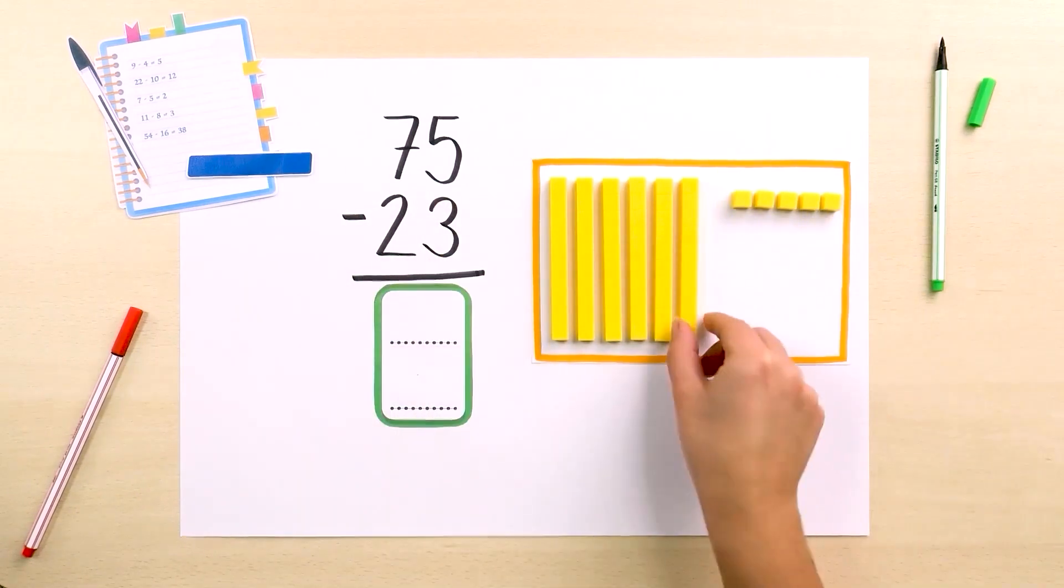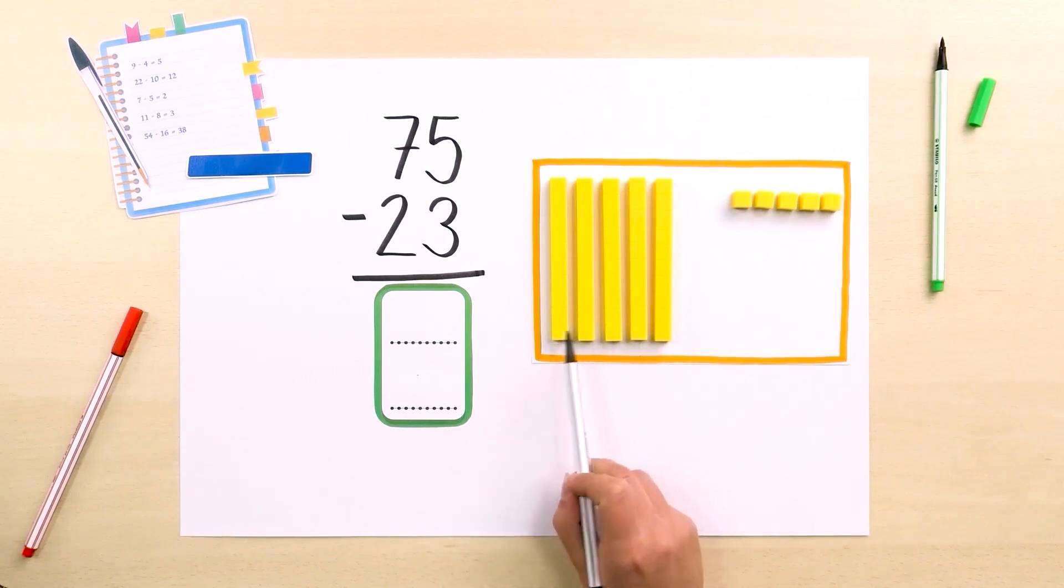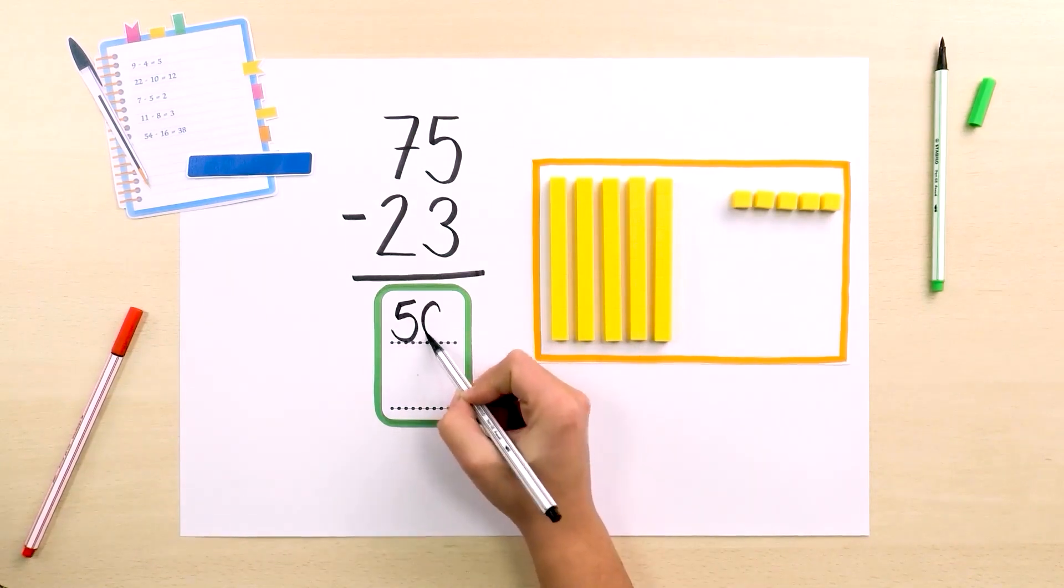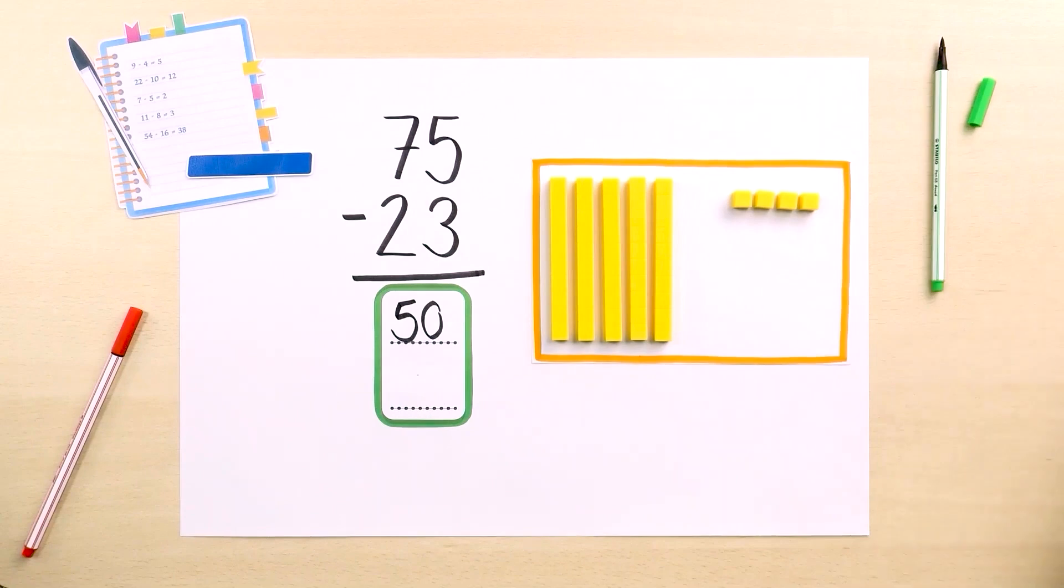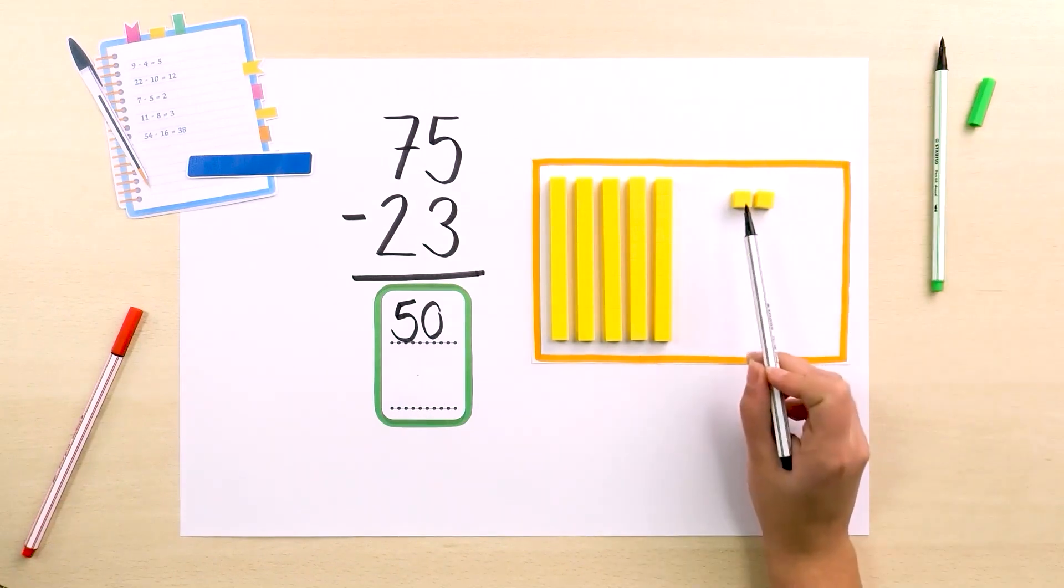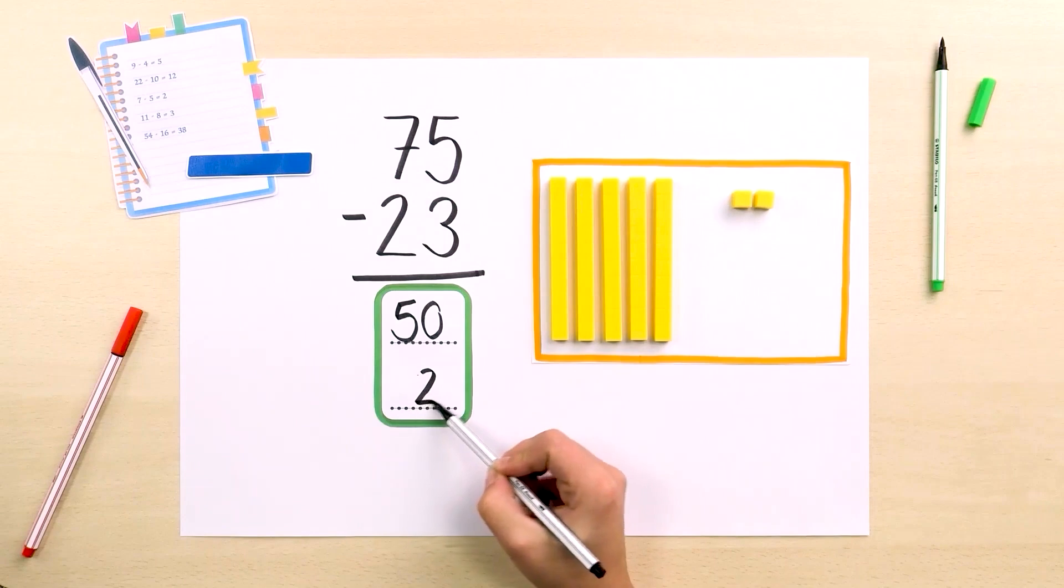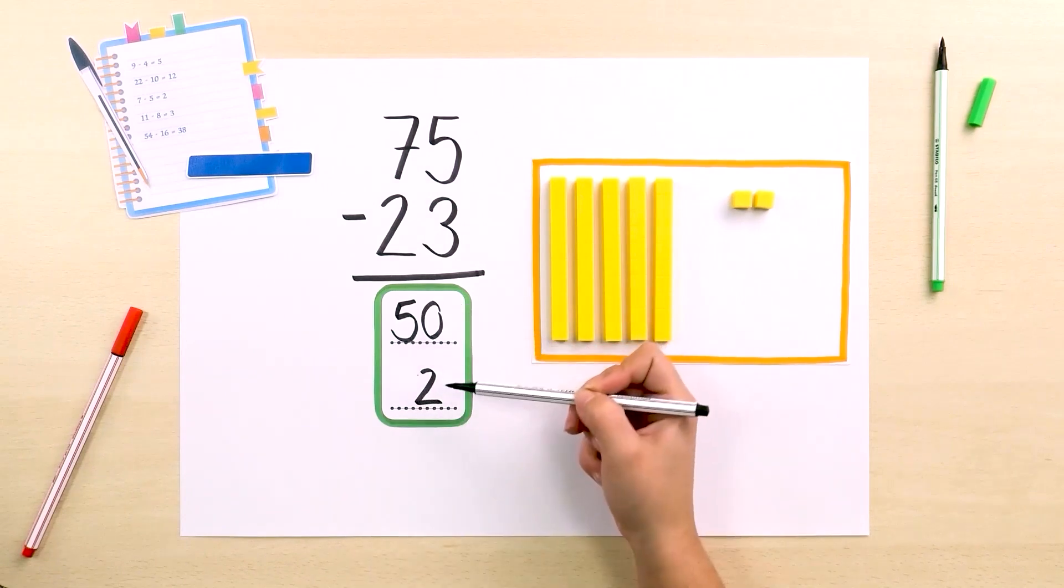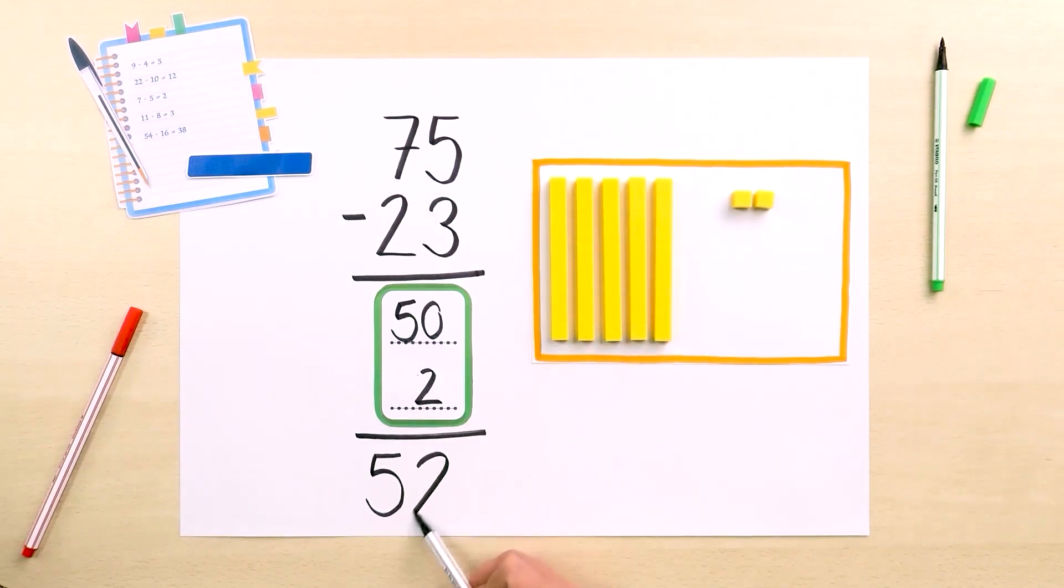First, we can take away 2 bars, leaving us with 5, in other words, 50 cubes. And then we can take away 3 cubes, leaving us with 2. We write this in the green box and see that we are finally left with 50 plus 2 cubes, in other words, 52.